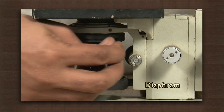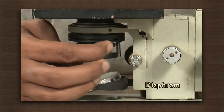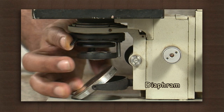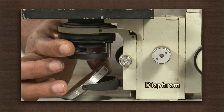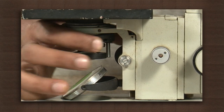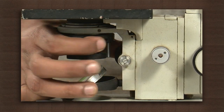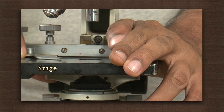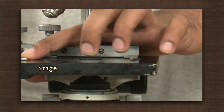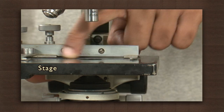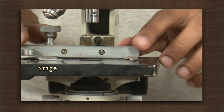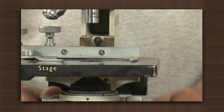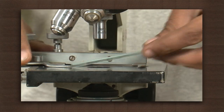The mirror is followed by a diaphragm, which is used to control the amount of light that reaches the stage. This is the stage, and this is where we keep the specimen, the magnified image of which is to be studied.